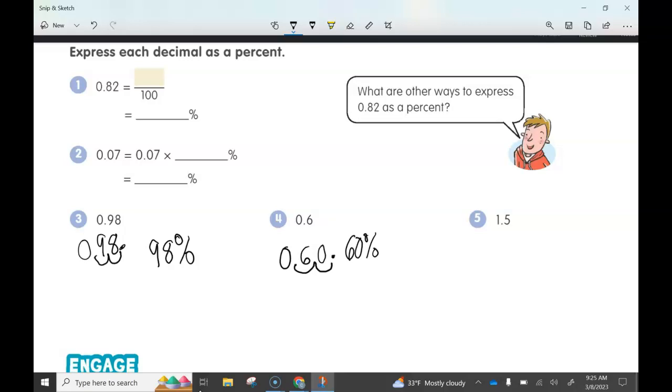So 1.5, what does that equal as a percent? We take that decimal, move it two places to the right. There's one place, and there's two places going around that invisible number. That's going to give us 150%.